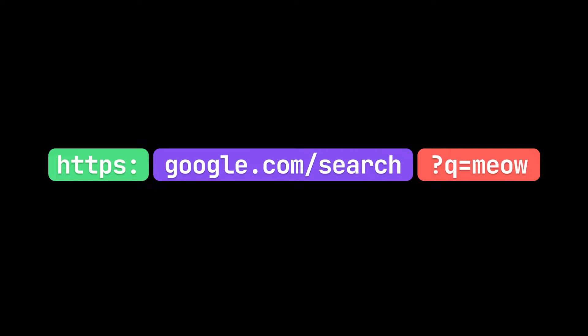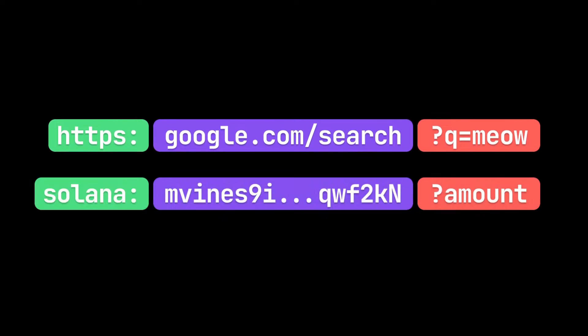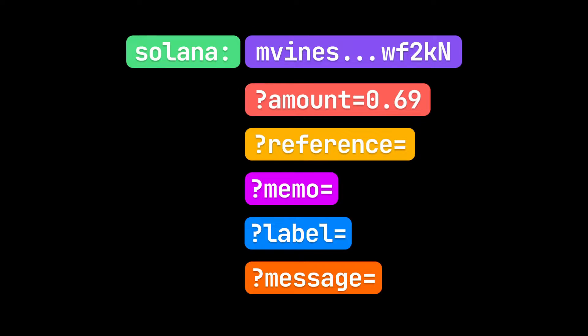It uses URLs, just like web addresses, to compose transactions. URL params are used to define what's being sent, and it supports fields like reference and memo to store what the payment is for on-chain.